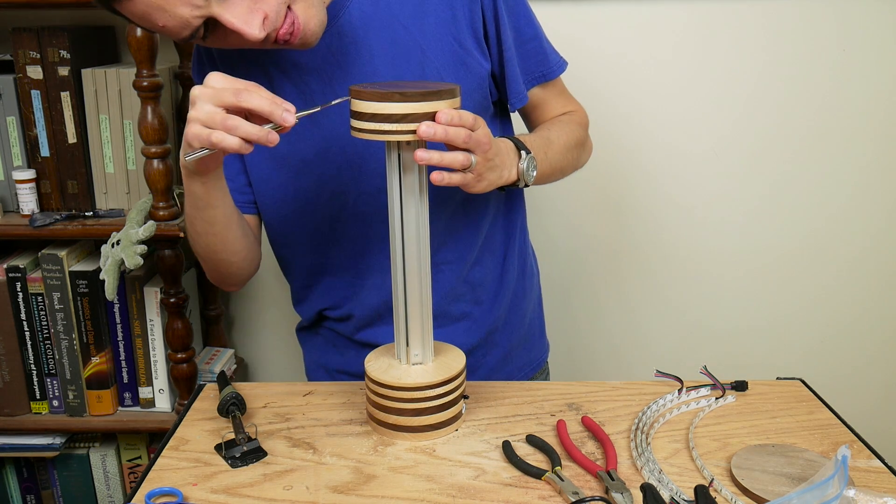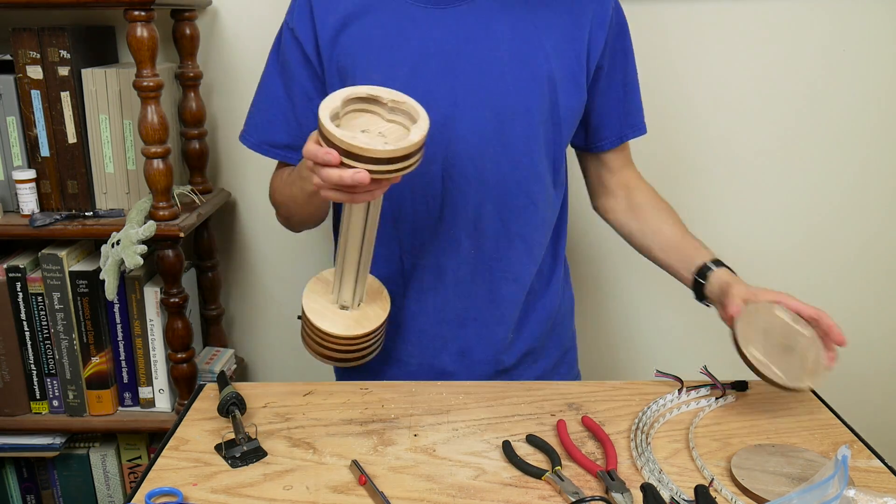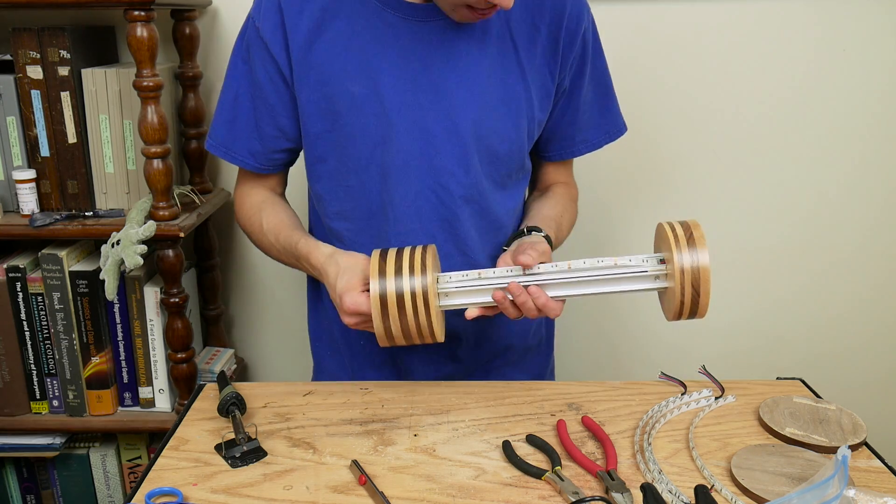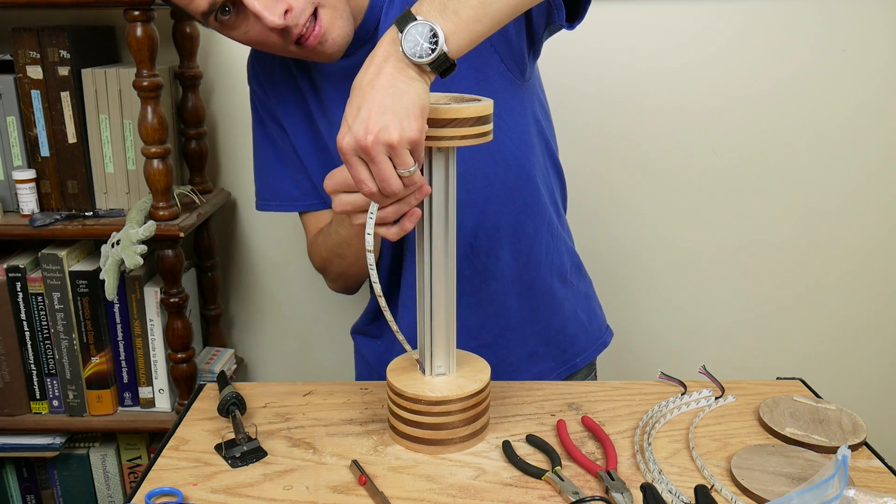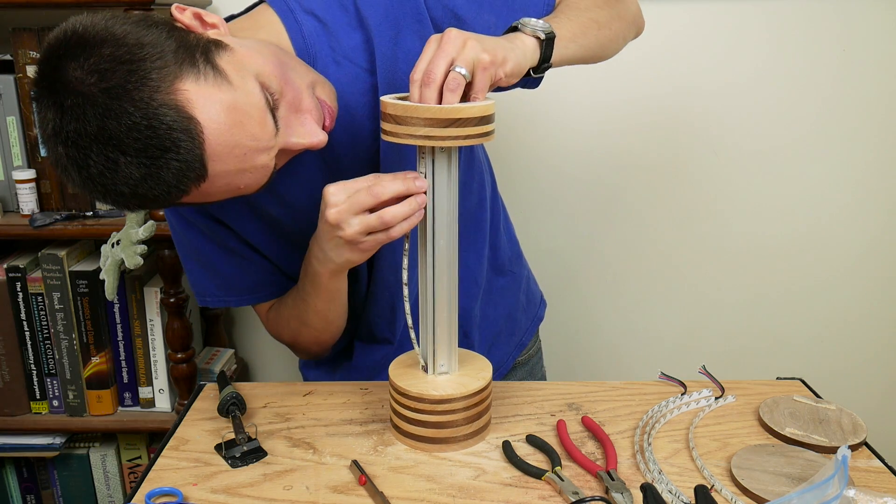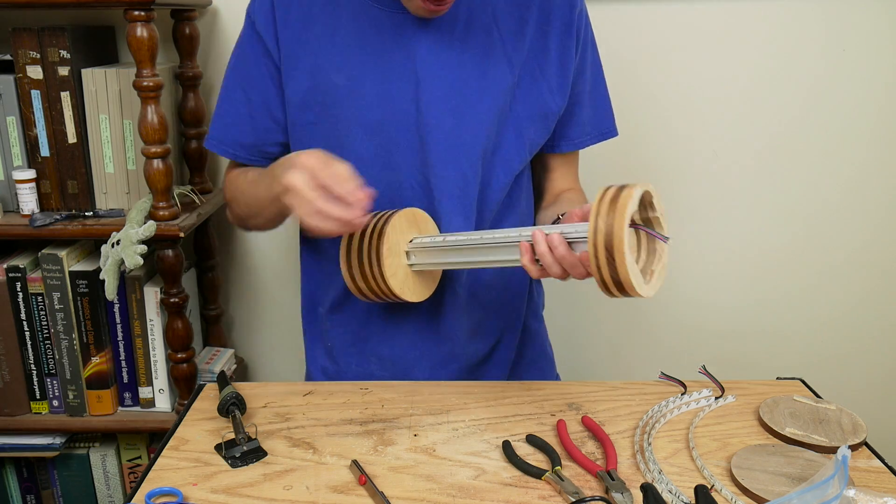I removed the top of the lamp which was just held on with double sided tape. And installed the first LED strip with the plug. This LED strip light, like most, has adhesive on the back. I removed the backing and stuck this first strip to the aluminum channel. It probably would have been better if I had waited to do this though.